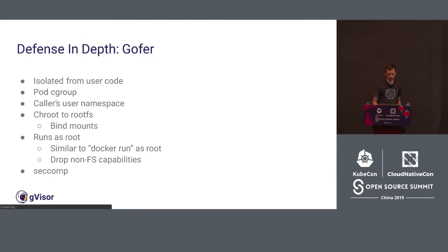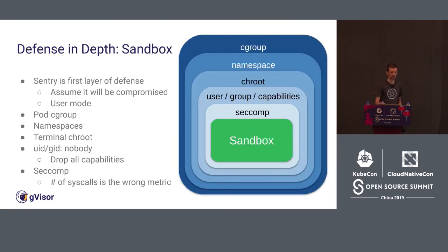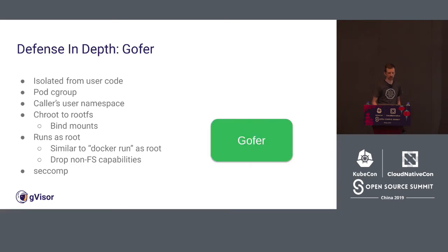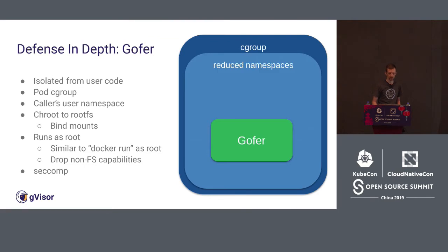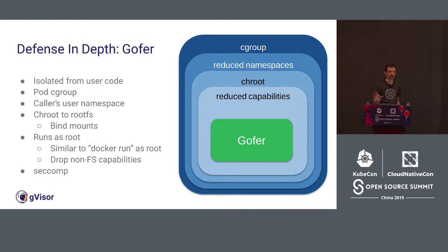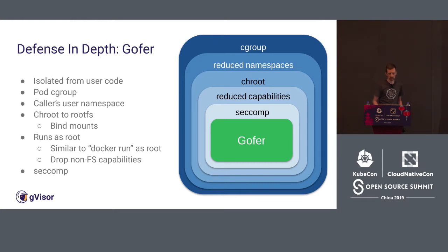For file operations the sandbox can't do directly — like opening a file — we use a separate process called the gofer. The gofer has a similar setup but actually has access to the file system used by the container. It's run in a cgroup with reduced namespaces, pivot-rooted to the actual file system with needed mounts. It has reduced capabilities and a fairly restricted seccomp profile — it can open files, but is restricted enough that even if you exploit a bug in the gofer, you hopefully can't break out of it.